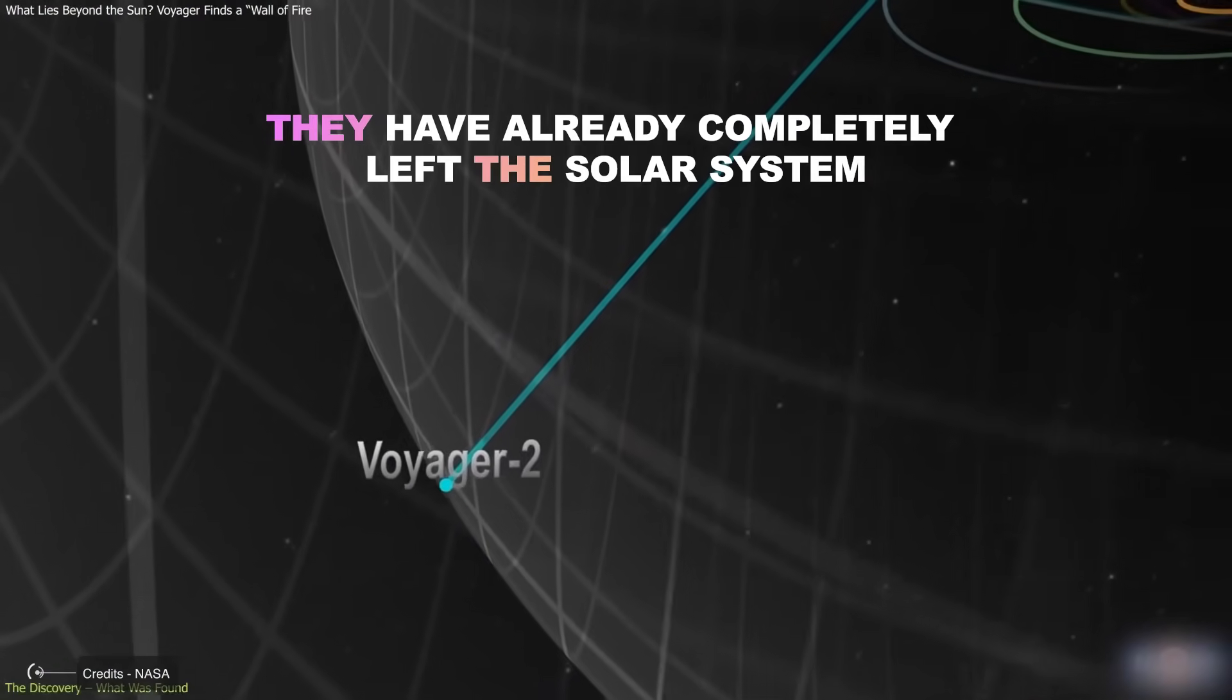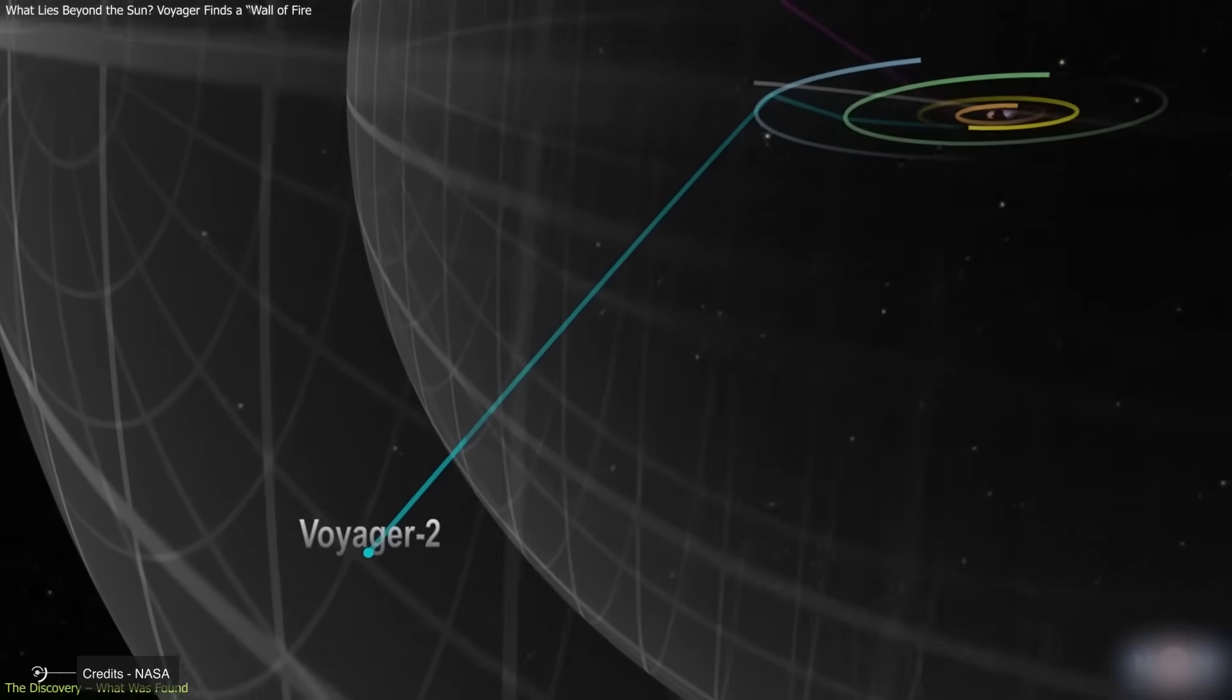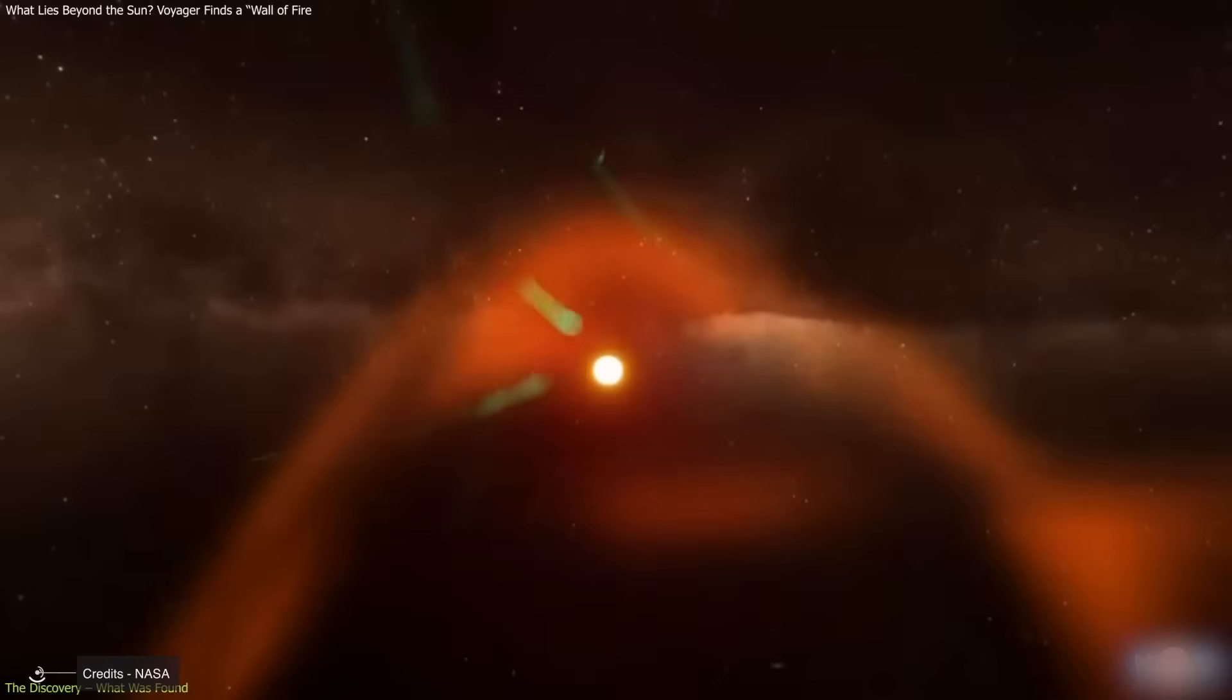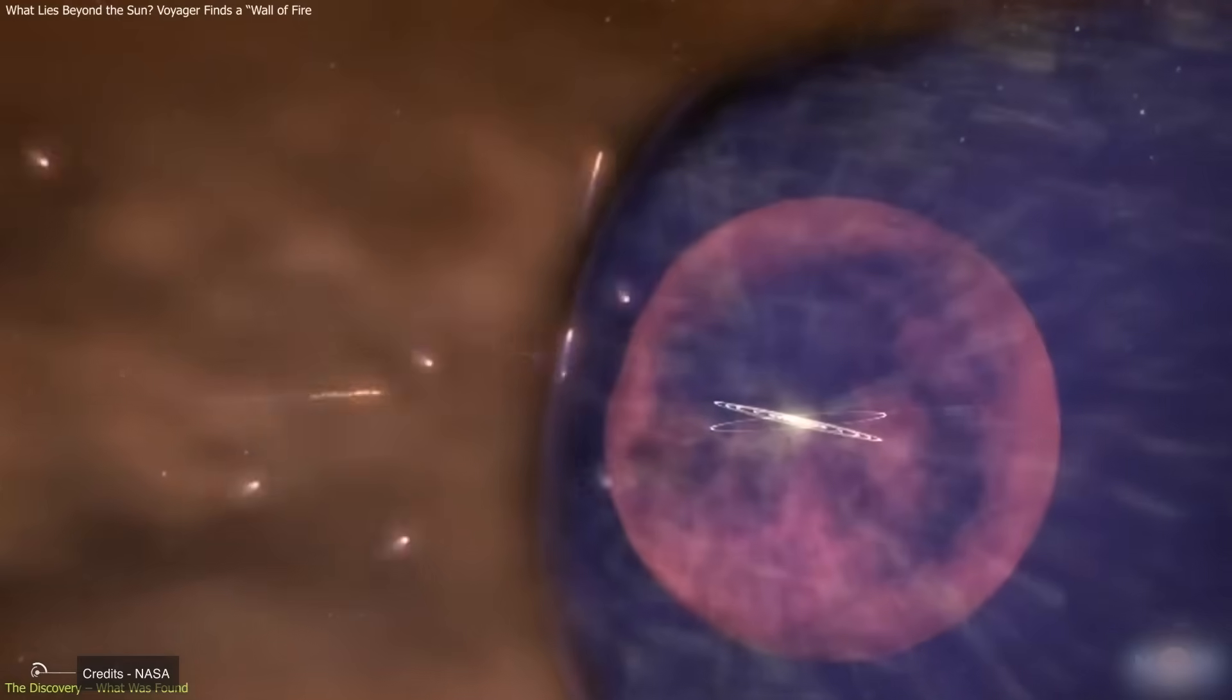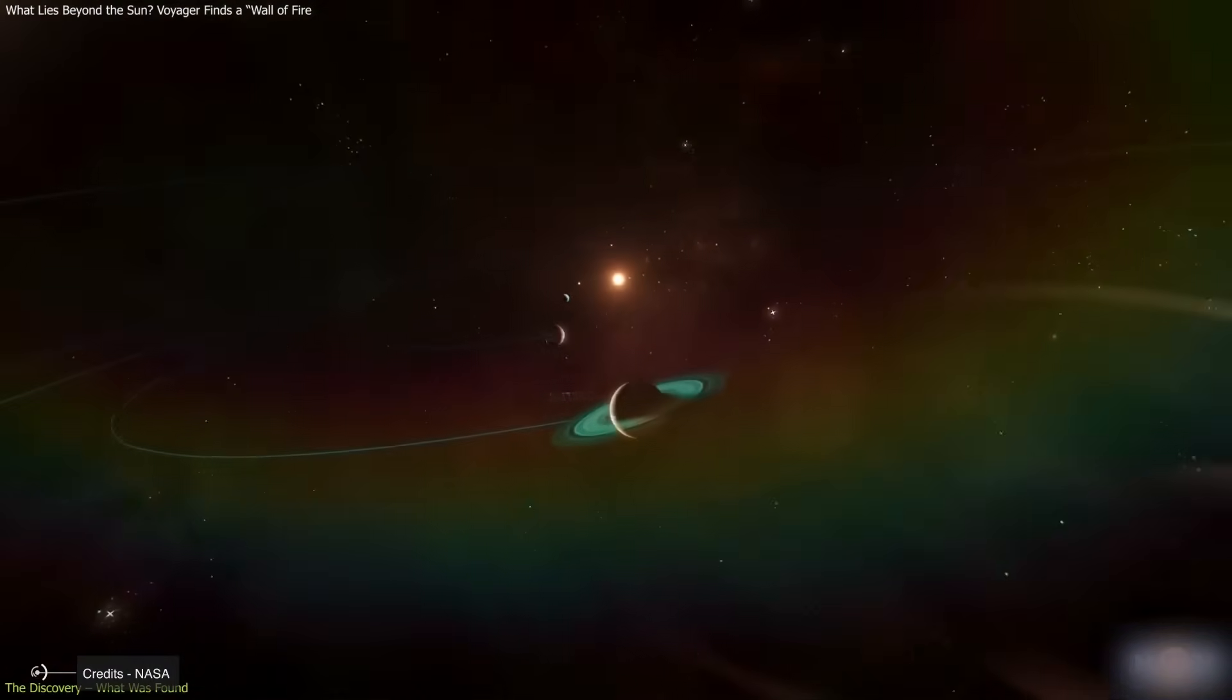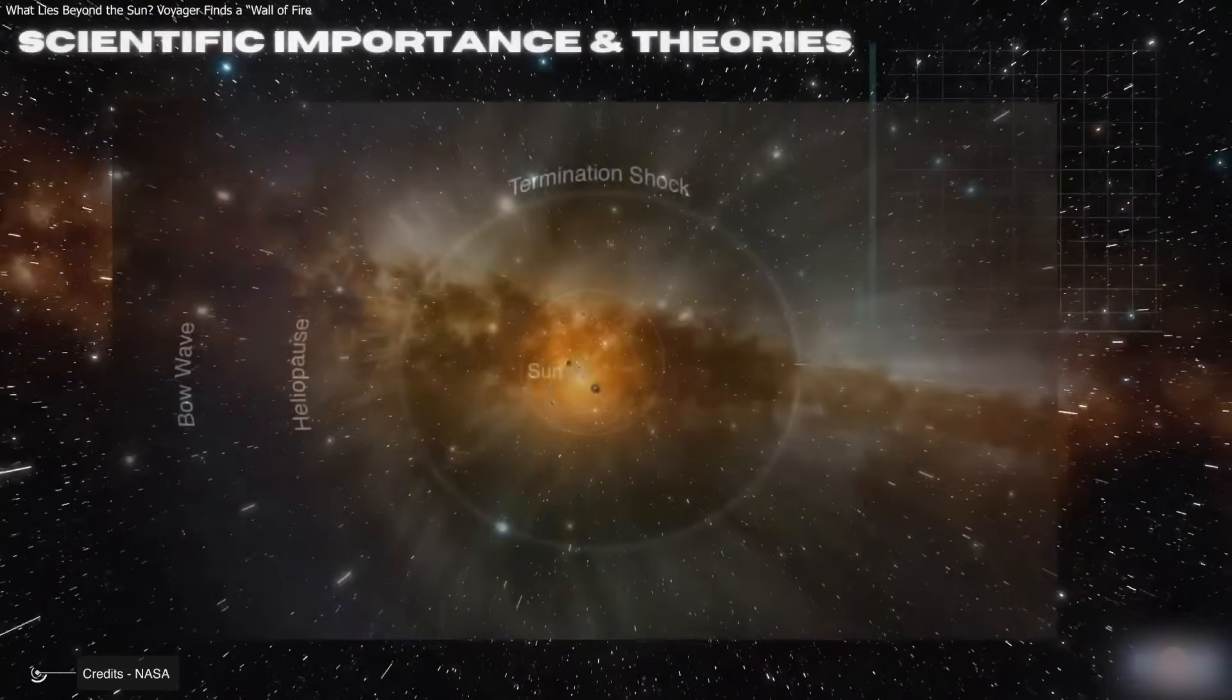They have already completely left the solar system. It is often said that the Voyager probes have already left the solar system. And while this statement has some truth, it is also misleading. In reality, what they have done is cross the heliopause, the boundary where the solar wind ceases to have an influence. But that does not mean they have completely left the solar system.